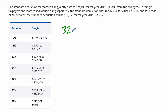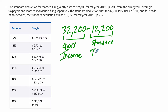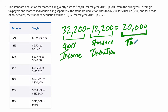We started with $32,200 — that's our gross income. The government is not going to tax us on all of this; we get to deduct some amount from it, and then the government will tax what remains. There are all kinds of credits and deductions, but here we're starting with the basics. So we take a standard deduction of $12,200. The federal government leaves that alone, and what remains — the difference — is $20,000. That number is your taxable income, and the government is going to tax you on this.